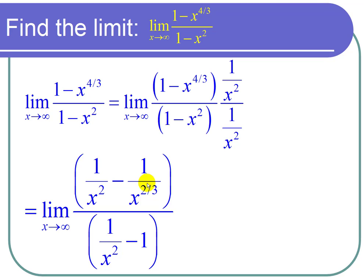For the bottom, if I multiply by 1 over x squared, I get 1 over x squared times 1 or 1 over x squared minus 1 over x squared times x squared or minus 1.